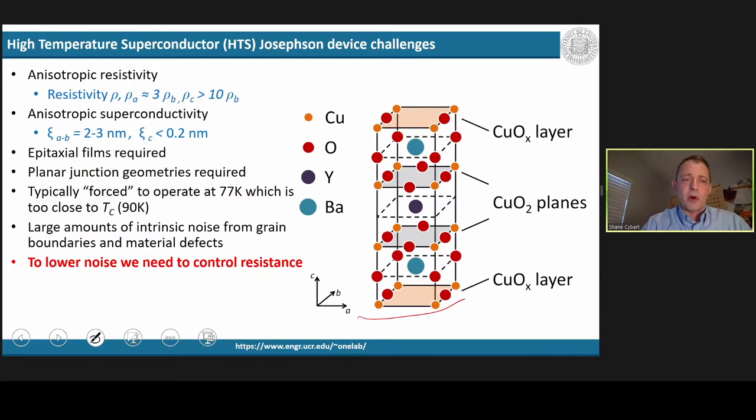Furthermore, perhaps the biggest problem with high-TC devices currently is the large amounts of intrinsic noise that comes from grain boundaries and material defects. But for all SQUIDs, one thing that we do know is if we want to lower the noise, we need to be able to control the resistance, the intrinsic resistance, so that we can get larger signal-to-noise ratios.